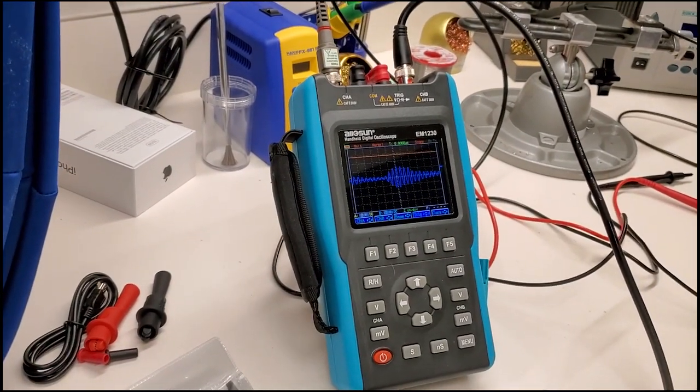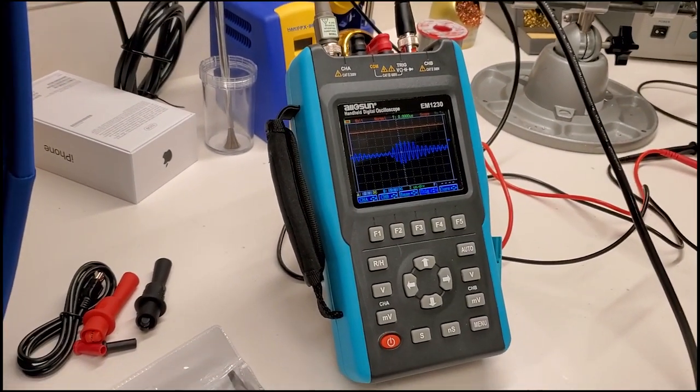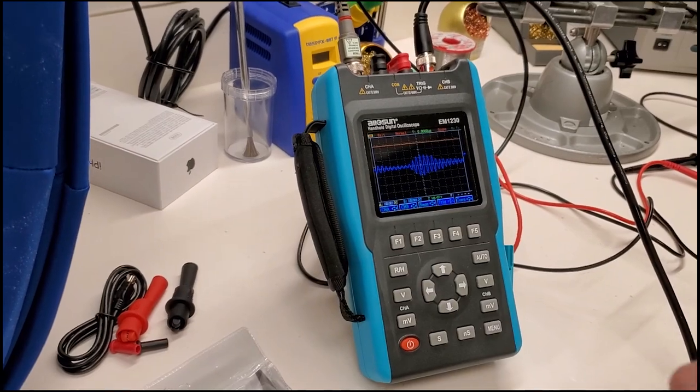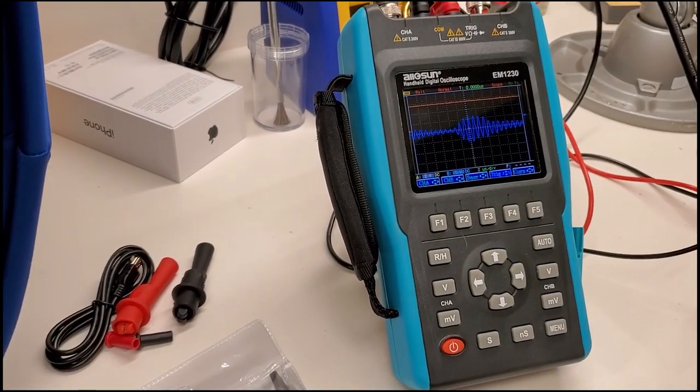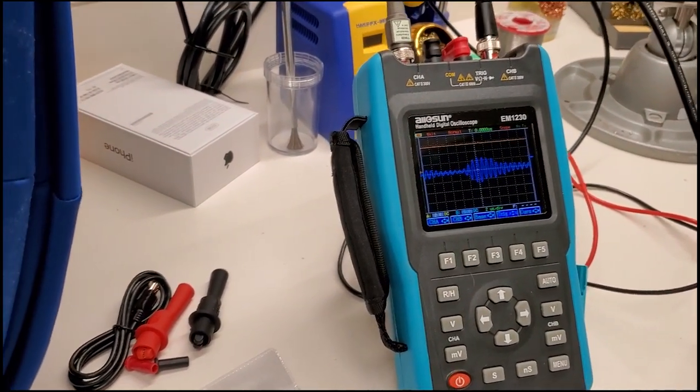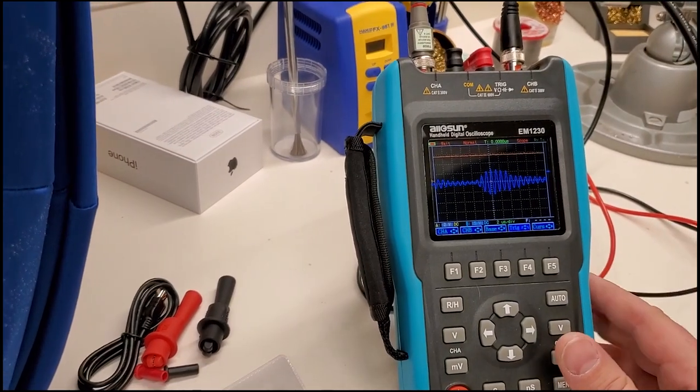Hi, everyone. Welcome back to A Better Biomed. Today, I've got a new piece of gear that I'm very excited to show to you. This here is the Allosun EM-1230. This is a battery-powered portable multimeter and oscilloscope.